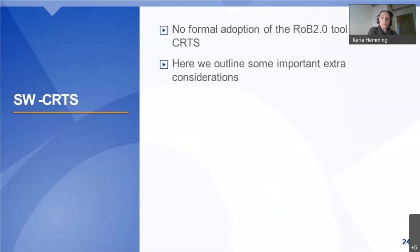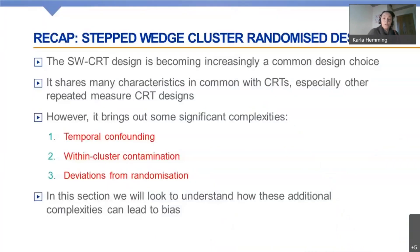Moving on, I want to think about how these risks of bias might affect a stepped wedge cluster randomized design. There's no formal adoption of the ROB2 tool for stepped wedge trials, but over the next few slides I'll outline important extra considerations that make this design at risk of bias. Although the stepped wedge shares many characteristics with parallel cluster designs and other repeated measures designs, it brings about some significant complexities: temporal confounding, within-cluster contamination, and deviations from the randomization.